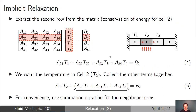To derive implicit relaxation, it's easier to look at the equation for each row of the matrix individually rather than the entire matrix. So we extract one row, apply implicit relaxation, and then build back up to the matrix form. Extracting the second row, we have A21 T1 plus A22 T2 plus A23 T3 plus A24 T4 equals B2.